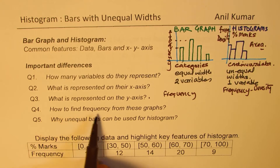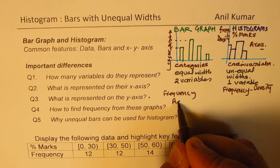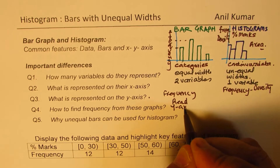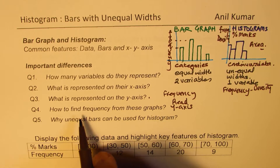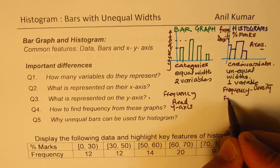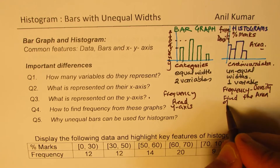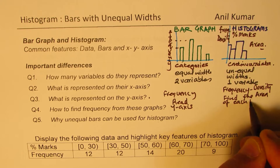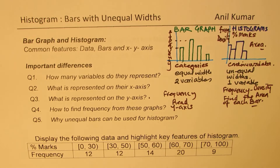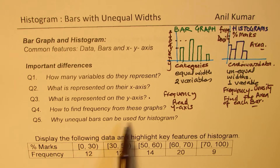So how do we find frequency from these graphs? For a bar graph, this frequency you can read directly from the graph — just read the y-axis. To get the frequency from a histogram, you have to find the area of each bar. So area represents the frequency in the case of a histogram.